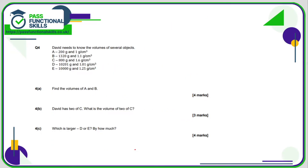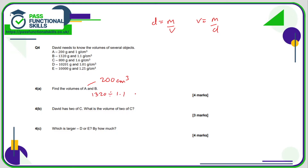Question number four. David needs to know volume when he's got the mass and the density. Remember, density is mass divided by volume; flipping gives V equals mass divided by density. For A, 200 divided by 1 gives 200 cubic centimetres. For B, 1320 divided by 1.1 gives 1200 cubic centimetres.